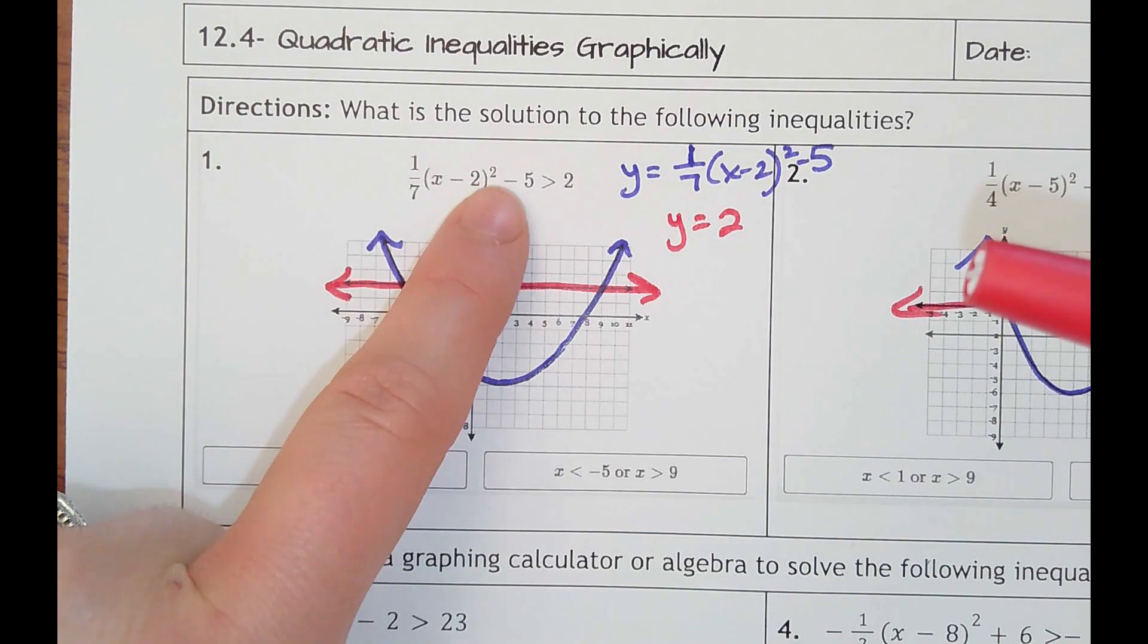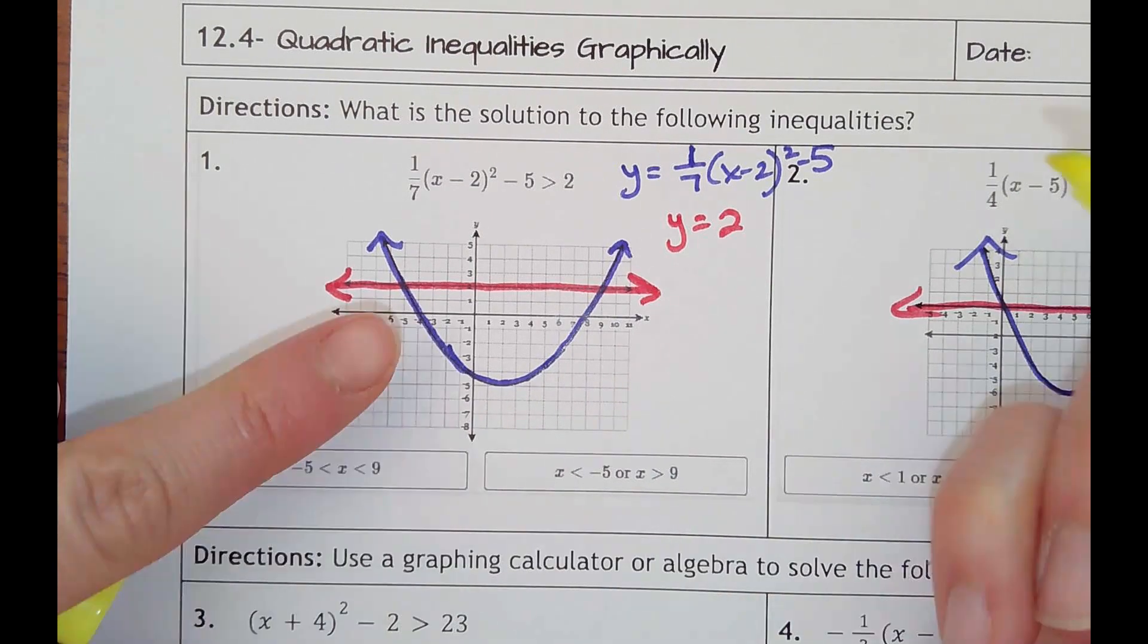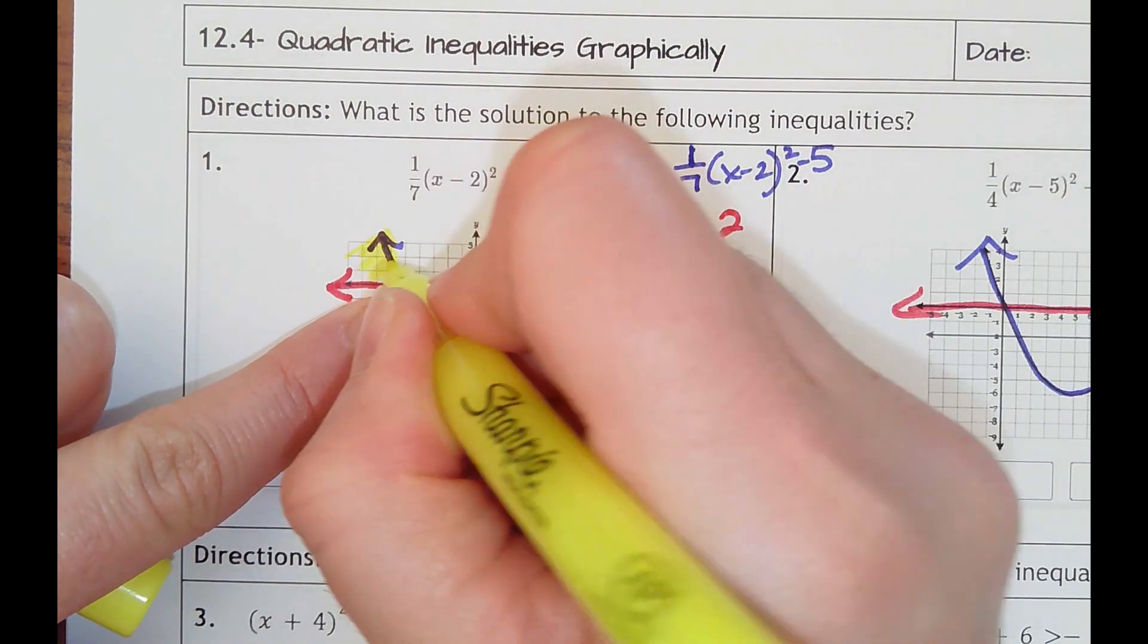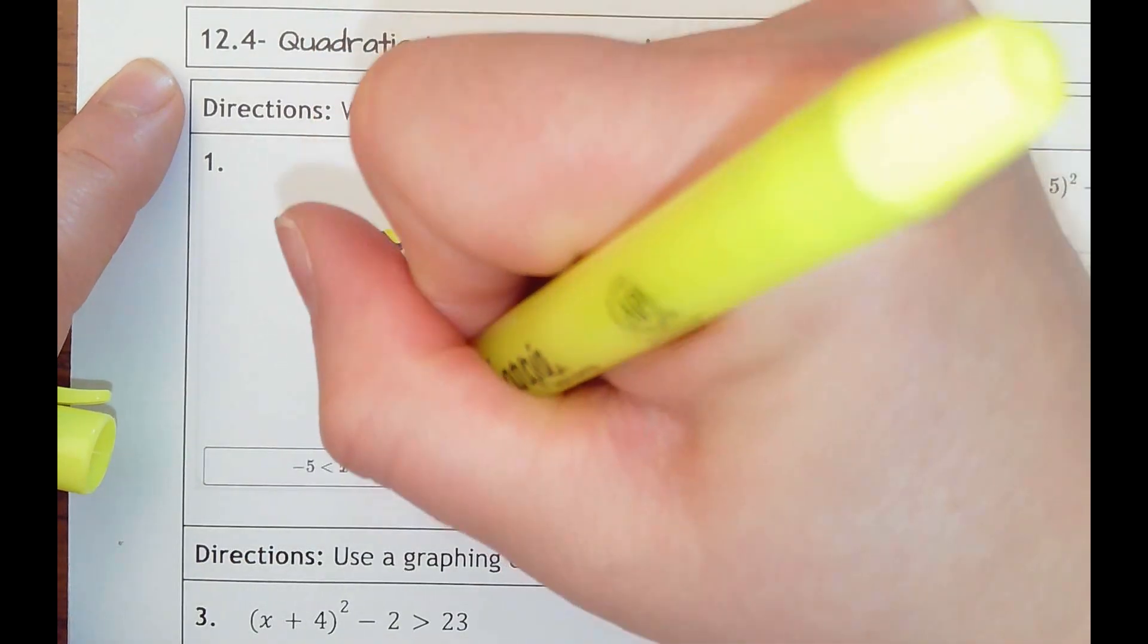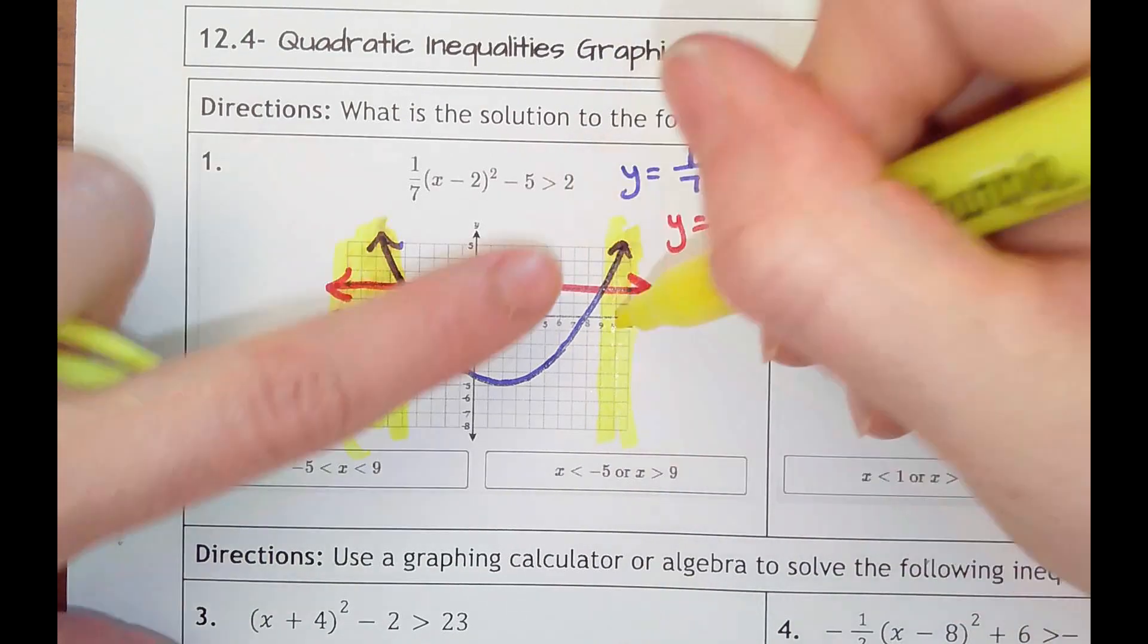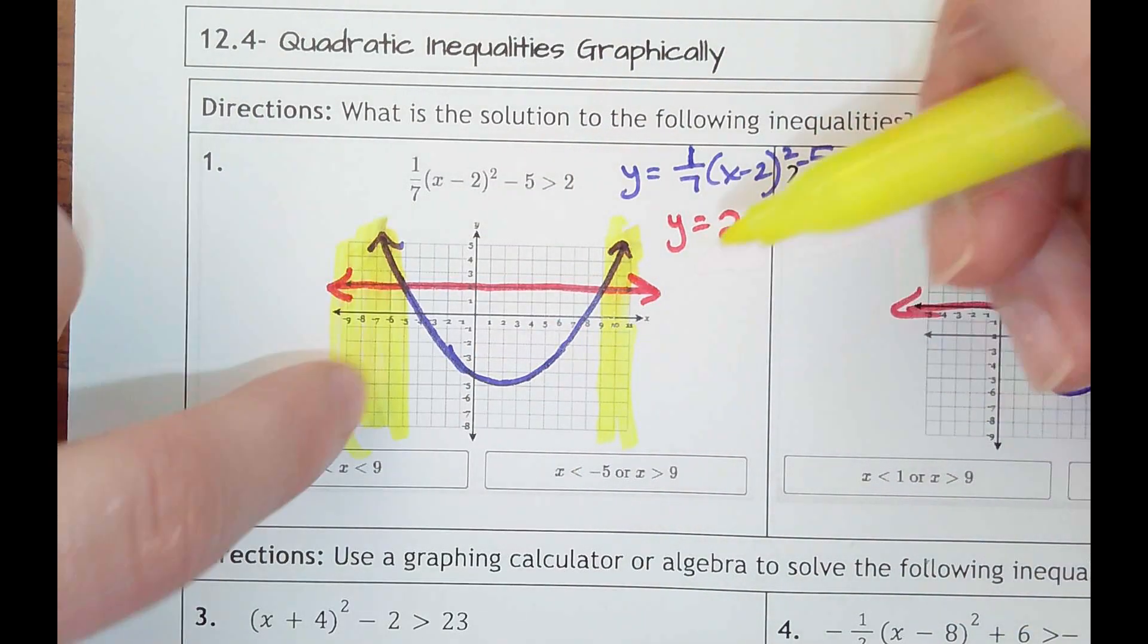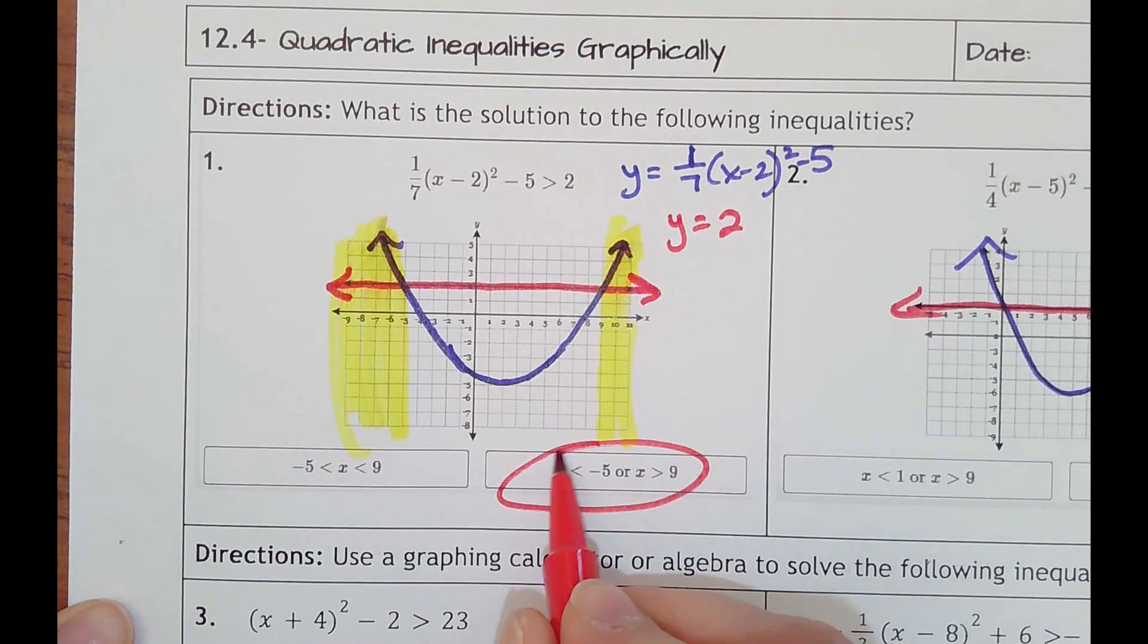It wants to know where are these values going to be greater than 2. If you're thinking greater than, you're thinking above the line. So that would be here and here. Remember, you're just worried about the x values, so where they intersect straight down and straight down. And you can tell this is an or answer. It would be this one.